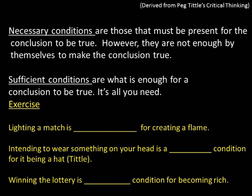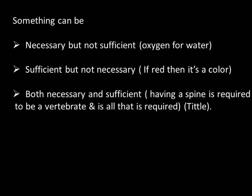Intending to wear something on your head is a necessary condition for something being a hat, but it's not sufficient — you could intend to wear a phone on your head, but a phone isn't a hat. Winning the lottery is a sufficient condition for becoming rich — that's all you need. But it's not necessary because you could get rich in other ways. Something can be necessary but not sufficient (like oxygen for water), sufficient but not necessary (like being red for being a color), or both necessary and sufficient (like having a spine to be a vertebrate).